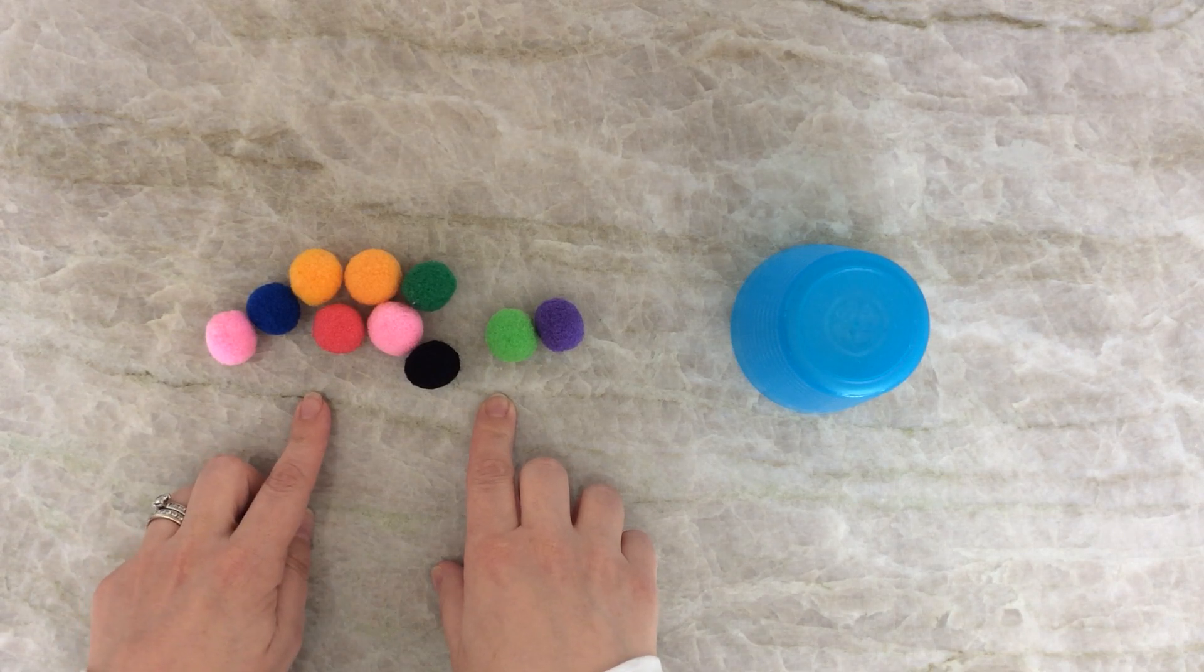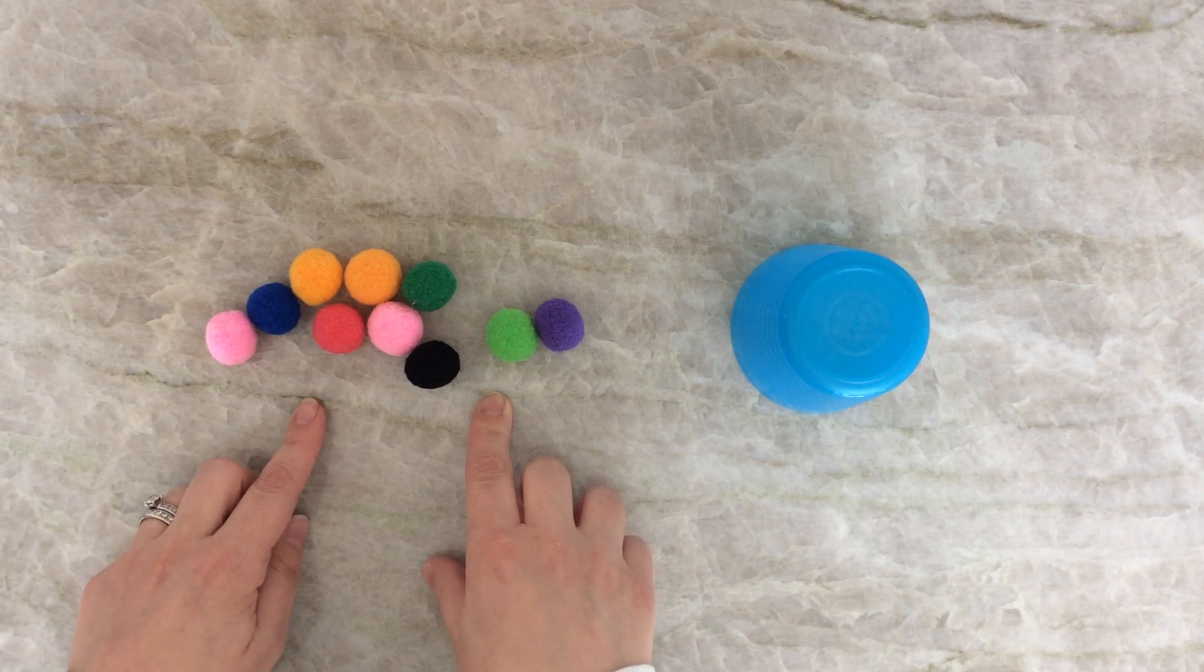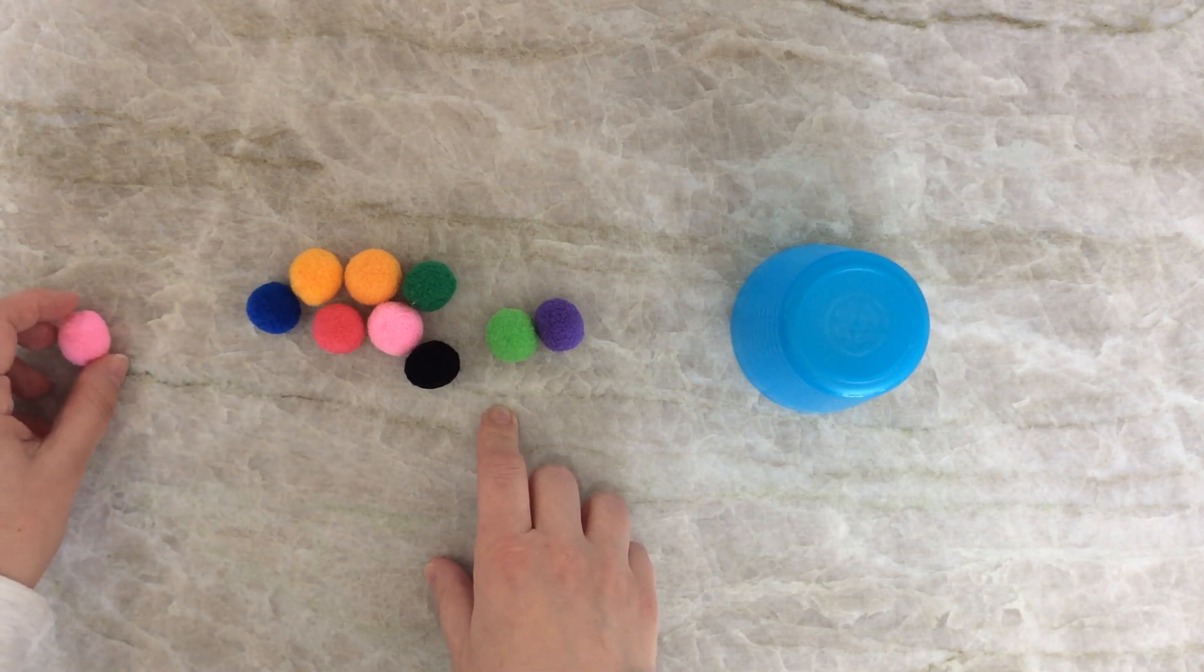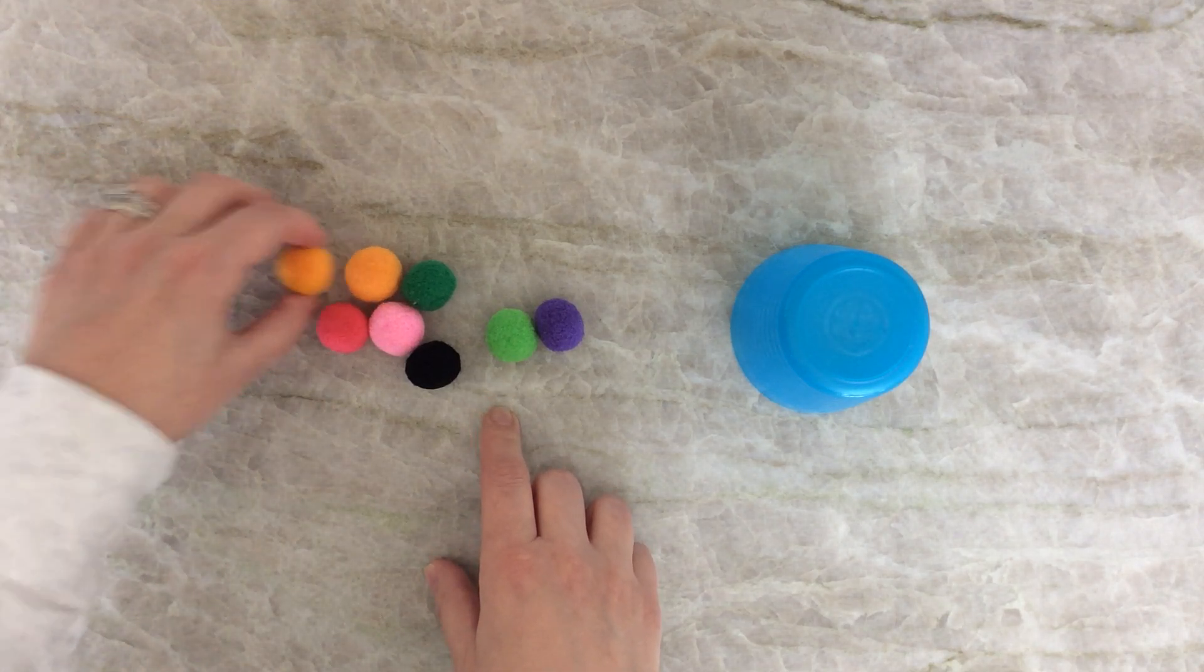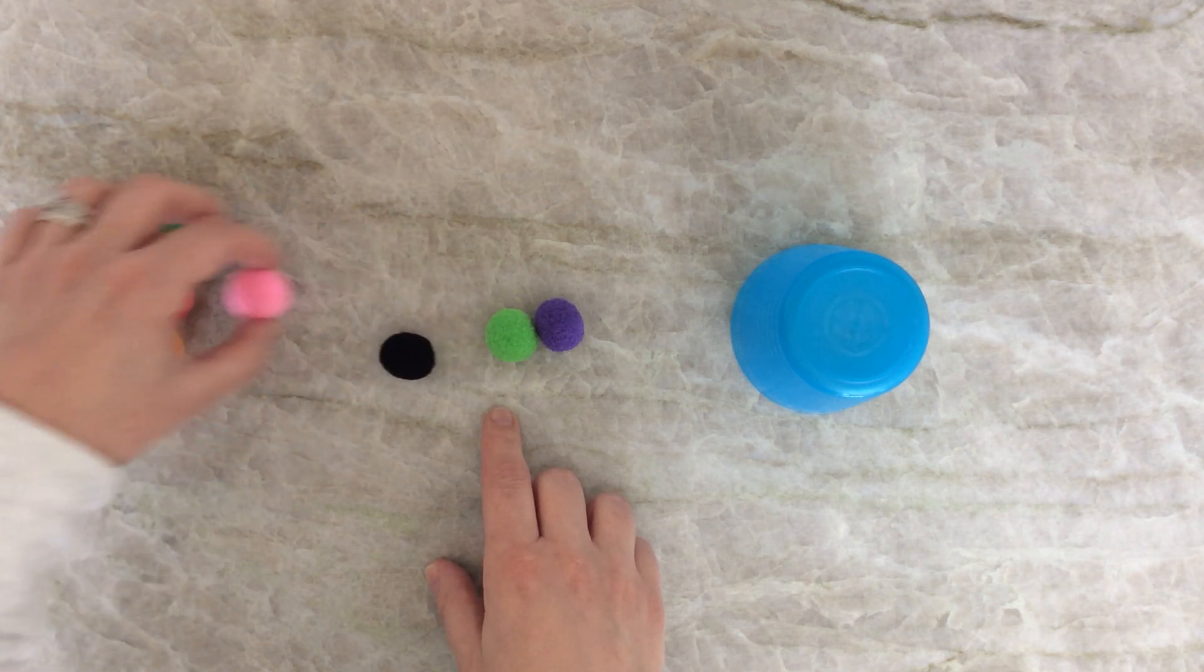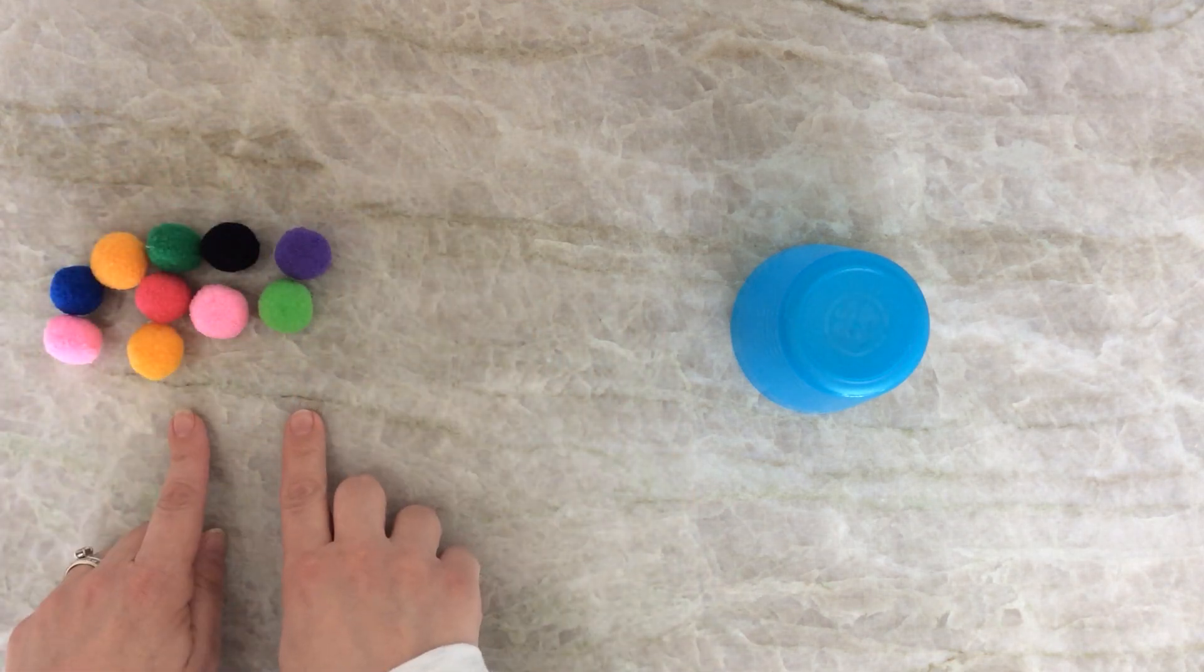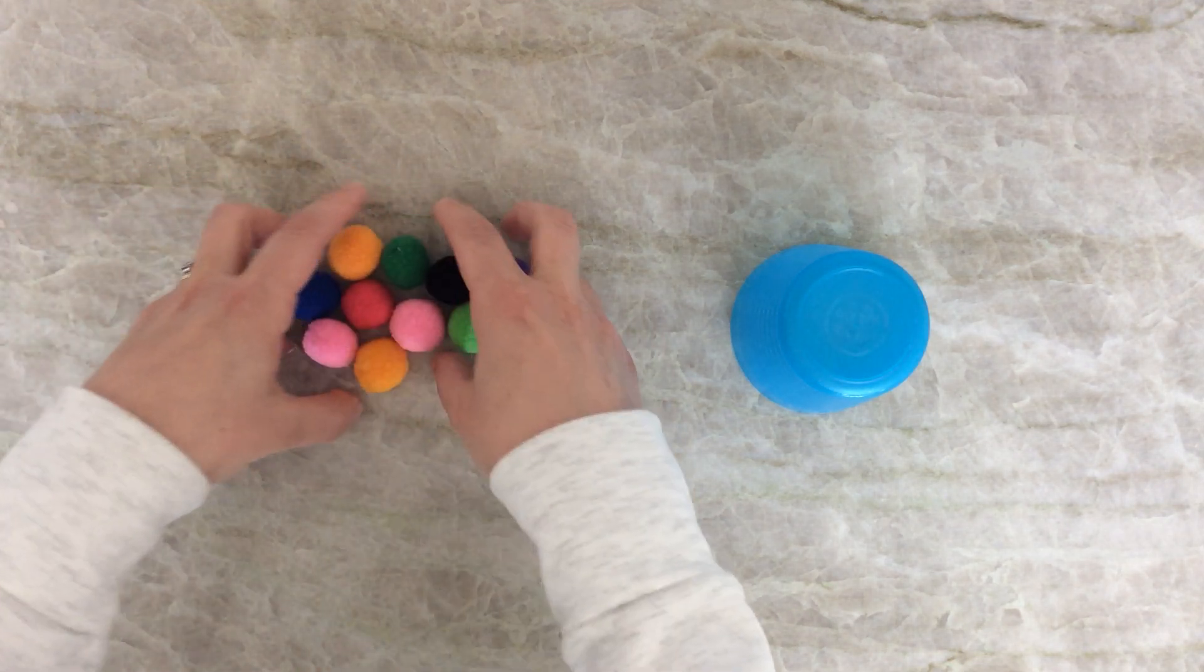Let's count and see how many pom-poms I have. Remember what we learned this week. When we count, we can move things over so we don't count them again. 1, 2, 3, 4, 5, 6, 7, 8, 9, 10. I have 10 pom-poms all together.